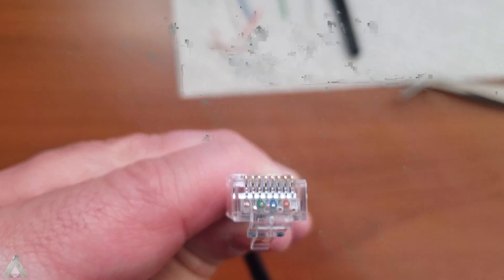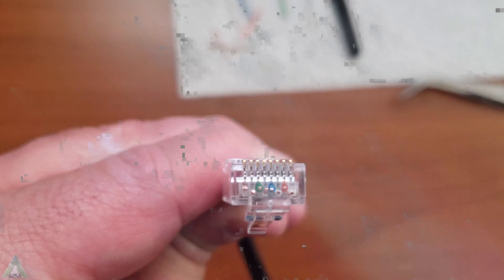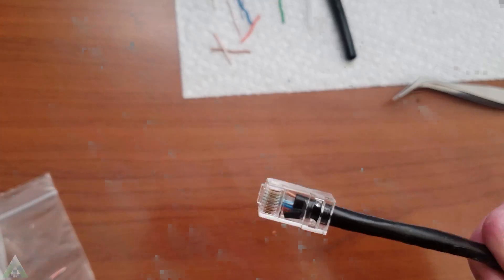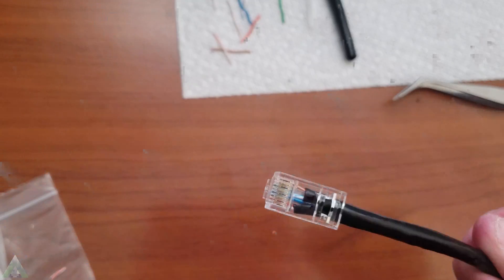Because once you crimp it, there is no going back. You'll have to cut it and start all over again. At this point, it never hurts to re-verify that you have everything correct and that it looks good before you crimp it. Once you verified it and it looks good, it's time to crimp the connection.